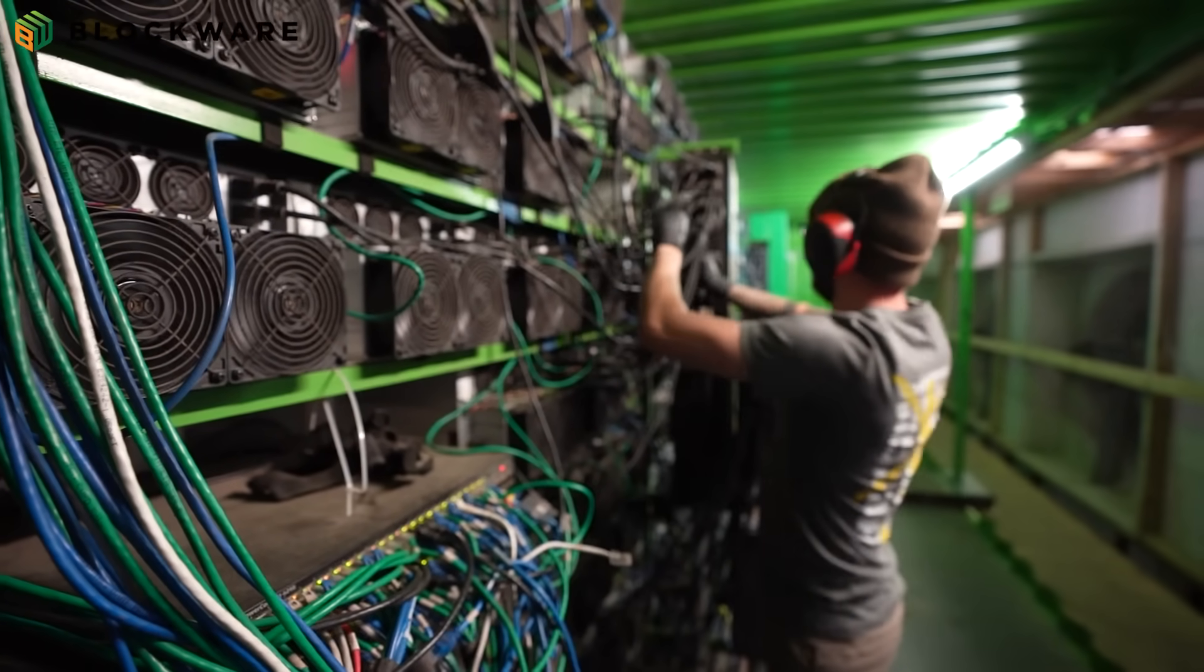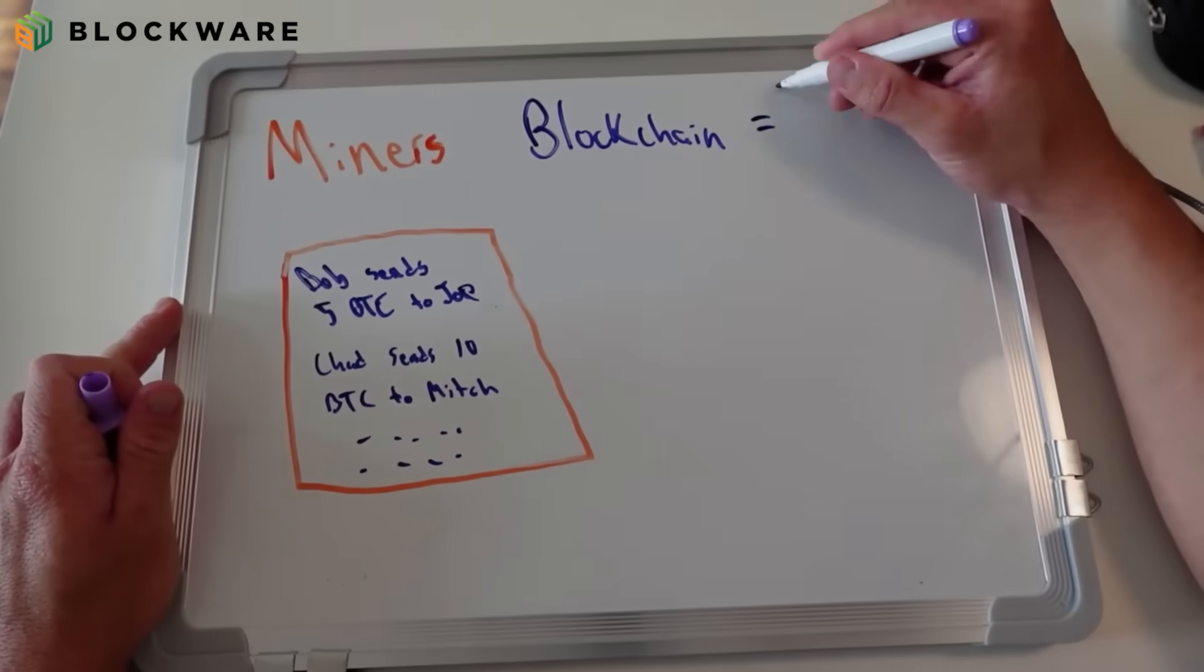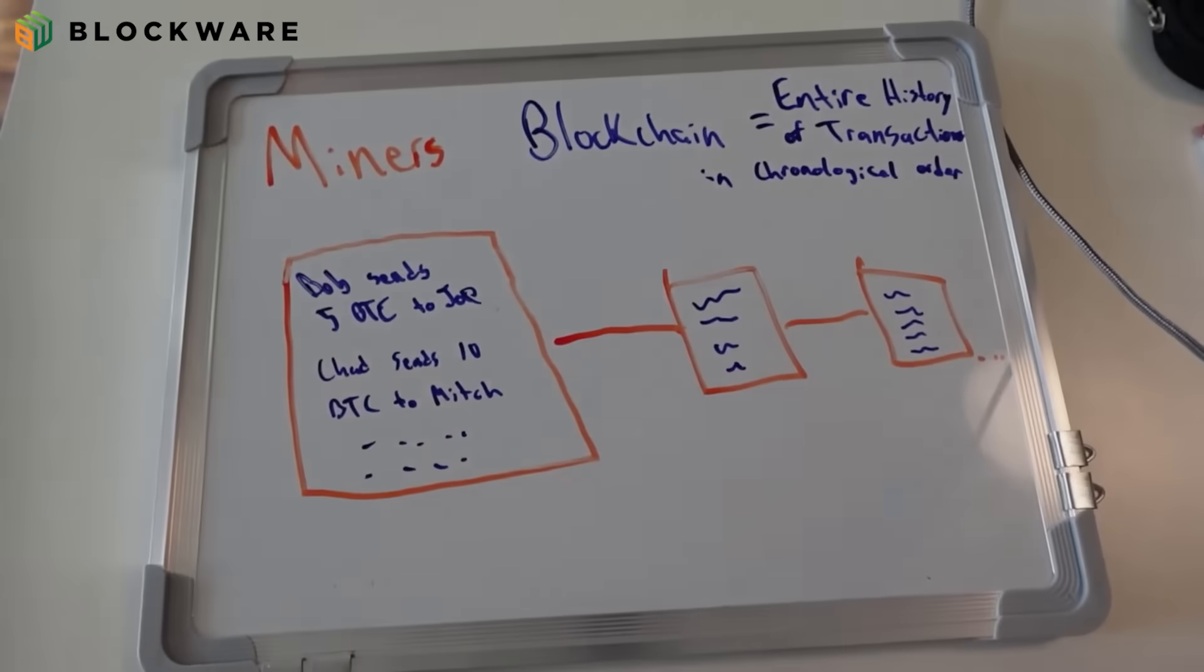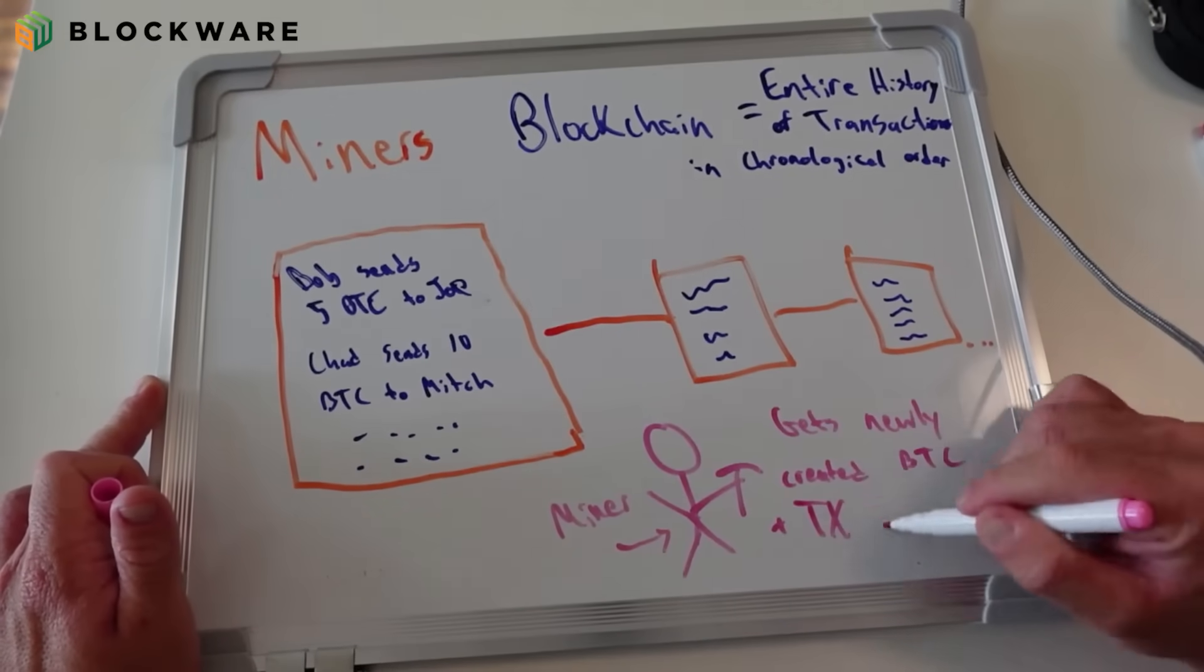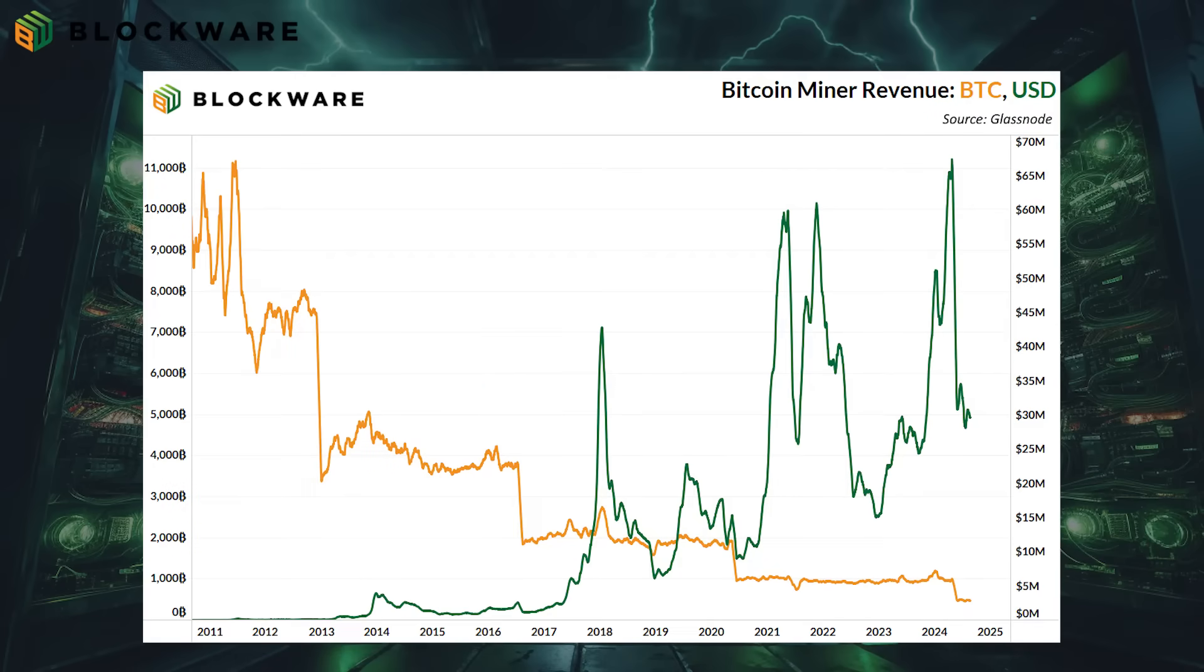This energy-intensive process is essential for securing the network, and in return for their efforts, their computational power, and their energy, miners are paid with newly minted BTC and all of the transaction fees from the transactions within those blocks. This reward system incentivizes miners to continue securing the network and validating transactions, ensuring the integrity and decentralization of Bitcoin.